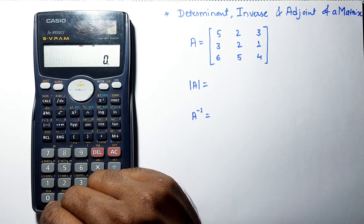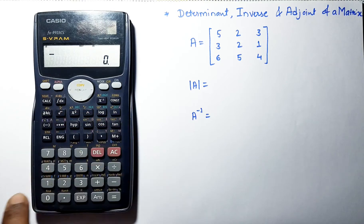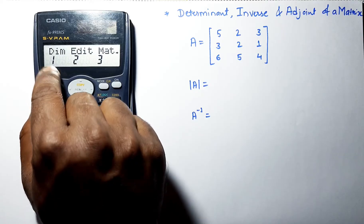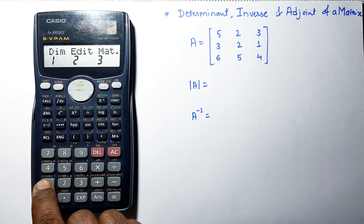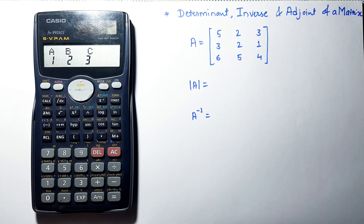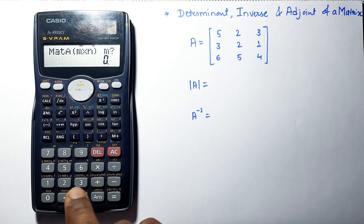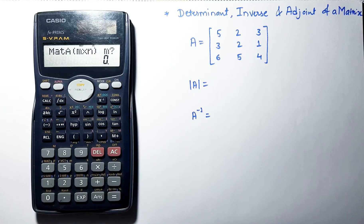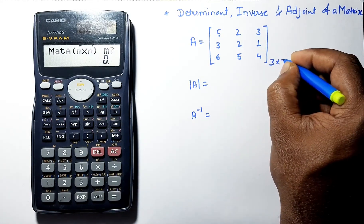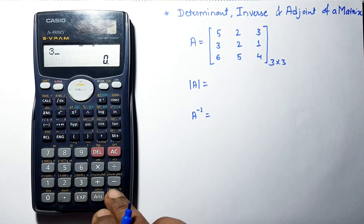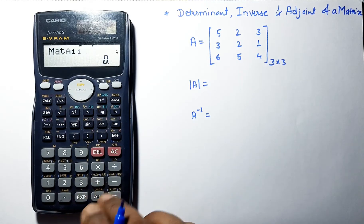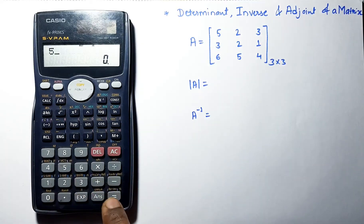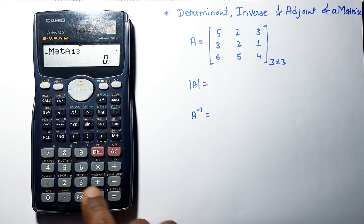Now we will define the matrix. Press Shift and 4 to select the matrix, go to dimension, select matrix A, and select the order of the matrix — we have a 3×3 matrix with 3 columns.